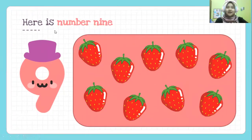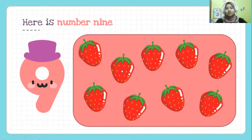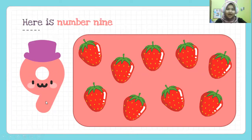Last one. Here is number nine. Number nine. What is this? Strawberry. Okay, let's count. How many strawberries are there? One, two, three, four, five, six, seven, eight, nine. That's right. There are nine strawberries representing number nine.